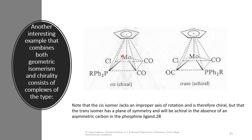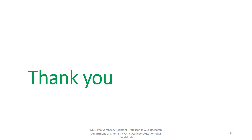This molybdenum complex exhibits both geometrical isomerism and optical isomerism. The cis isomer is chiral and optically active, while the trans isomer is achiral. Thank you for your attention.